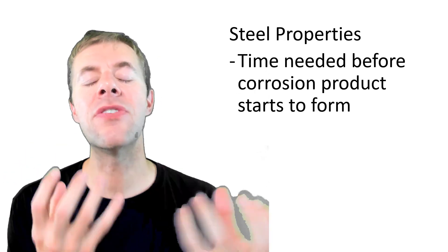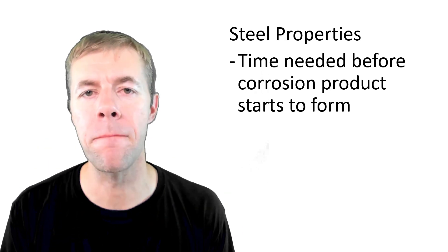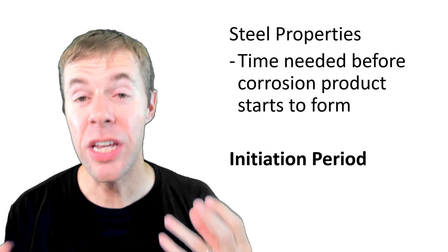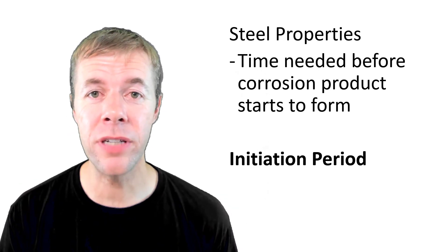This is called the chloride threshold level and is actually different for different types of steel. There's another term. It's the time needed before the corrosion product starts to form. This is called the initiation period. This again can be different for different types of steel.